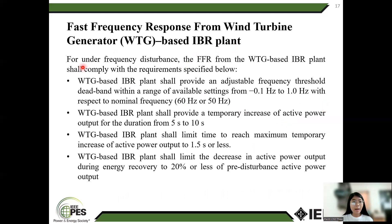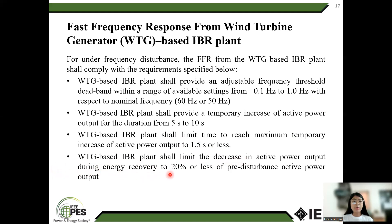The fast frequency response from wind turbines. For under-frequency disturbances, the fast frequency response of wind turbine generator-based IBR plans shall comply with the requirements specified. The wind turbine-based IBR plan shall provide frequency response from minus 0.9 Hz to 1 per unit with respect to nominal frequency of 60 Hz or 50 Hz. The wind turbine-based IBR plan shall provide a temporary increase of active power output for a duration from 5 to 10 seconds, and shall limit response to 1.5 seconds or less. The wind turbine-based IBR plan shall limit the drop in active power output due to energy recovery to 2% or less of pre-disturbance active power output.